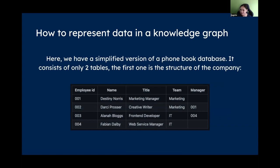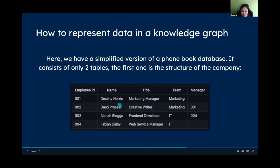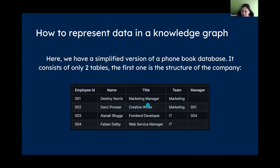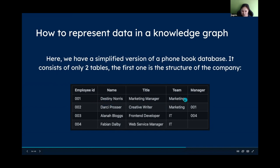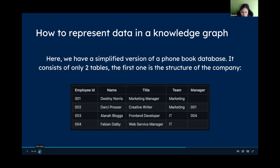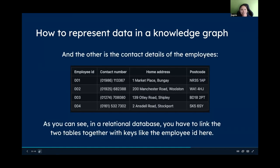This is a company example: employee ID, names — generated fake names — and titles. I just made them up. There are only two teams and two managers in this company. Destiny is the marketing manager, managing Darcy, for example. I never thought about gender — just generated a bunch of names, so if you think it's a little biased, it's just coincidence.